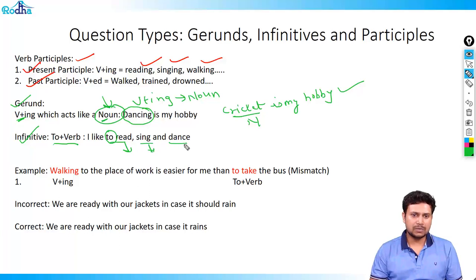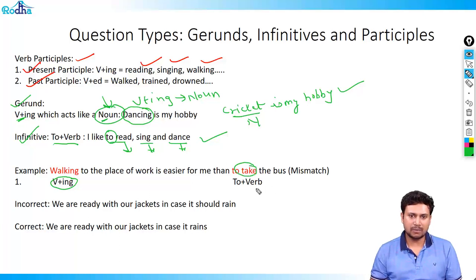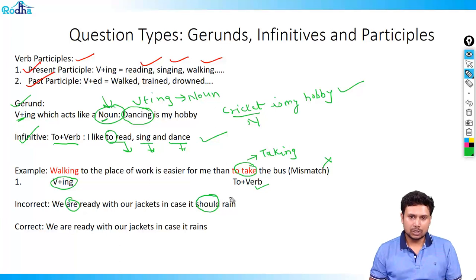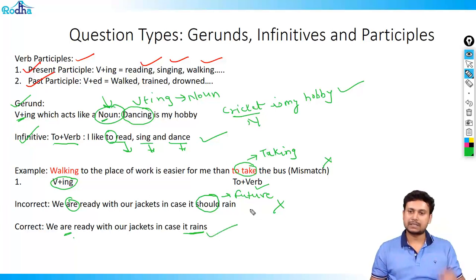Infinitives are in the form of 'to + verb.' For example: 'I like to read, sing, and dance.' It is not mandatory to repeat 'to' before each verb — as long as the verbs are in the same form, the sentence is parallel. Consider the example: 'Walking to the place of work is easier for me than to take the bus.' Here 'walking' is verb+ing and 'to take' is the infinitive — a mismatch. The correct answer is: 'Walking to the place of work is easier for me than taking the bus.'